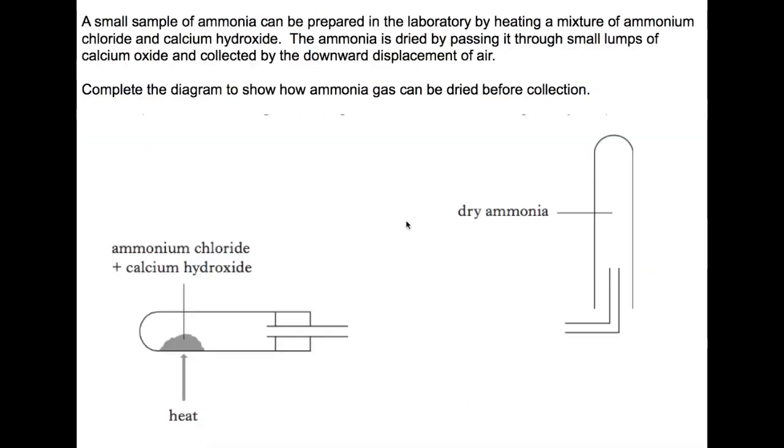In this second question we're looking at preparing a sample of ammonia. The question itself describes how the experiment is carried out and you need to read the question to be able to link up what's happening in the description of the experiment and what's already been drawn in the diagram. So if we highlight the different parts of the question, the first part says a small sample of ammonia can be prepared in laboratory by heating a mixture of ammonium chloride and calcium hydroxide.